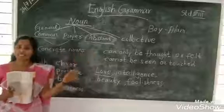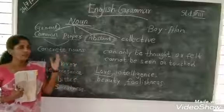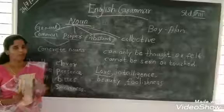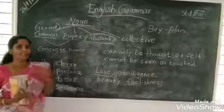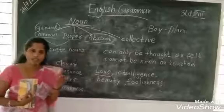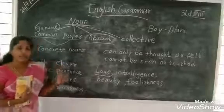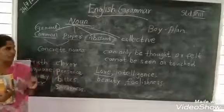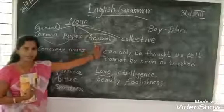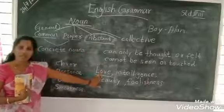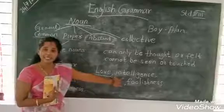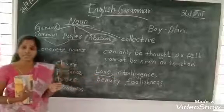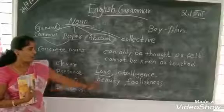Abstract noun can only be thought or felt. We can feel it. We can think about it. For example: love, intelligence — intelligence means a quality — then beauty, sound, foolishness. These are examples of abstract nouns.